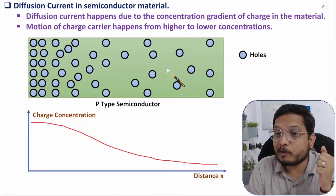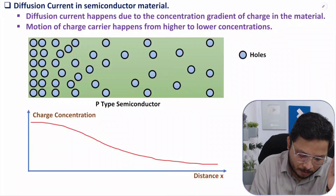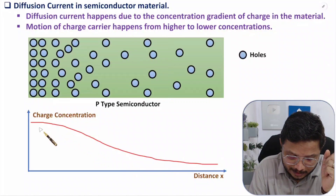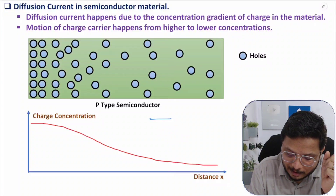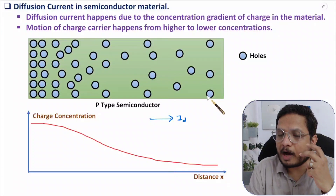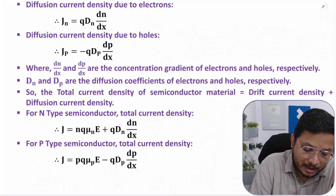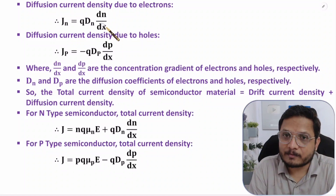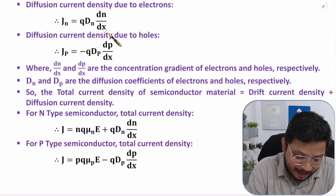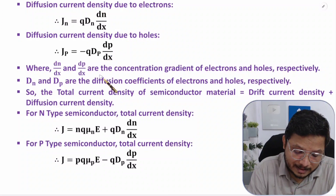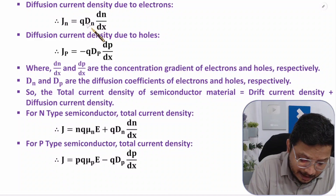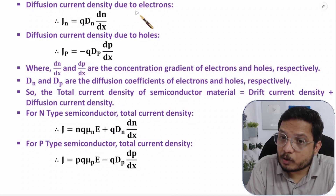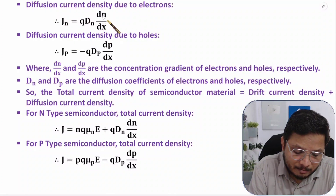The charge carrier will try to move from the region of higher concentration to lower concentration, and that movement makes a flow of current — that is diffusion current. If you observe, charge concentration is high on one side and as you go in the direction of distance x, charge concentration decreases. So diffusion current flows in that direction. Diffusion current density for electrons is: Jn = q·Dn·(dn/dx), where Dn is the diffusion coefficient of electrons and dn/dx is the concentration gradient of electrons.